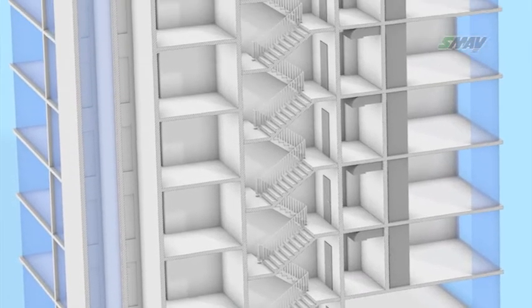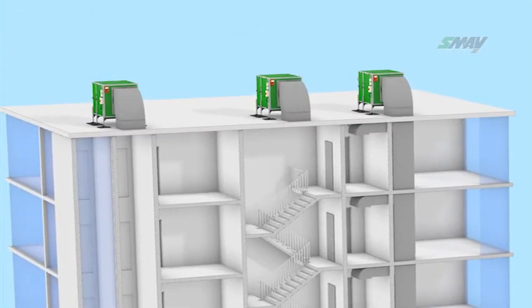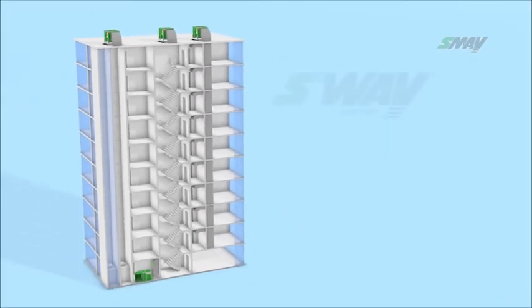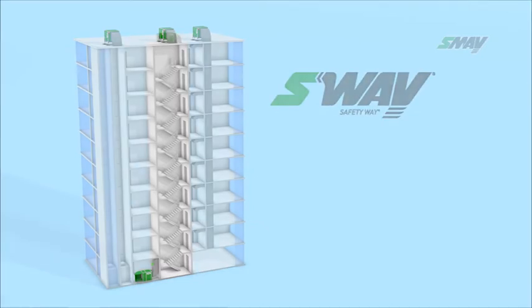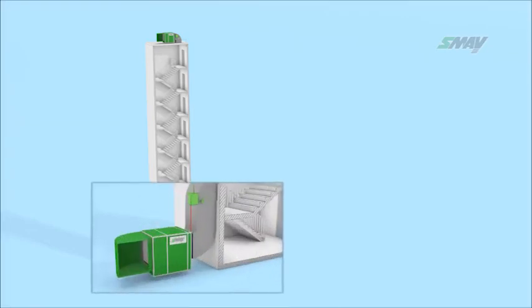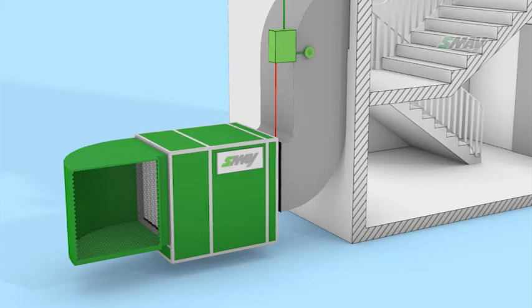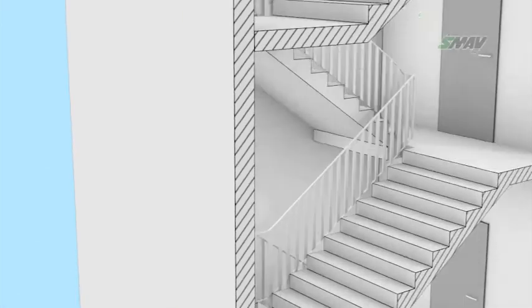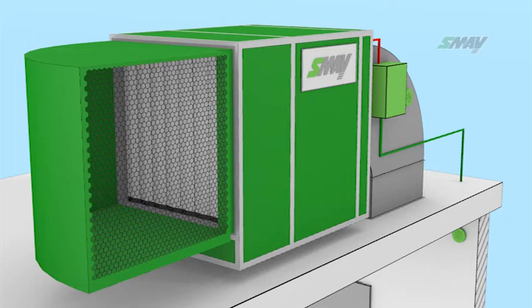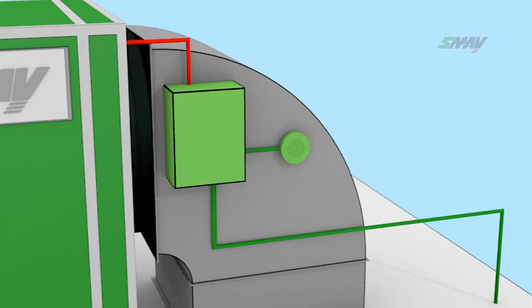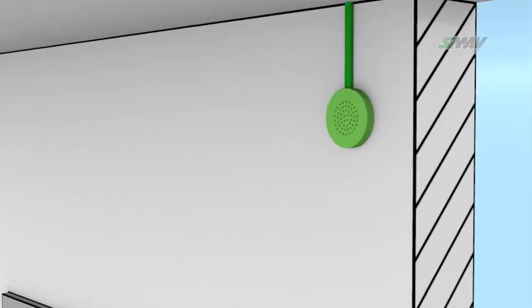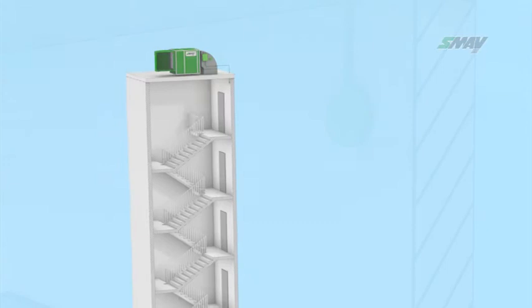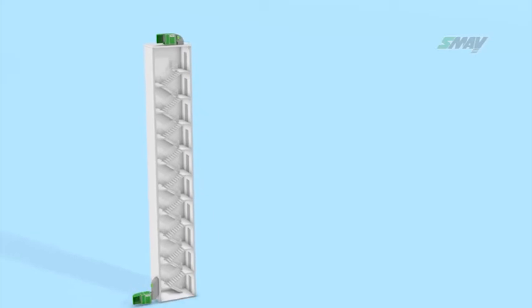Regardless of the required PDS pressure differential system class, SME suggests using the safety way pressure differential system. The basic version comprises two reversible flow fans located at the extreme floors of the stairwell, working in opposite directions — when one delivers air to the stairwell, the other extracts it. The fans are equipped with motorized air dampers operating as pressure controllers and a regulation automation system, creating a volume of controlled airflow at a controlled intensity, resulting in a stable distribution of static pressure across the entire stairwell.